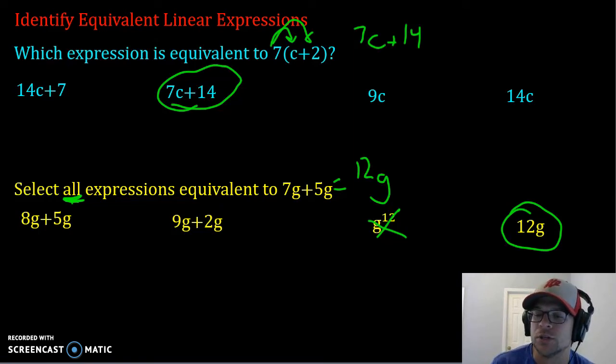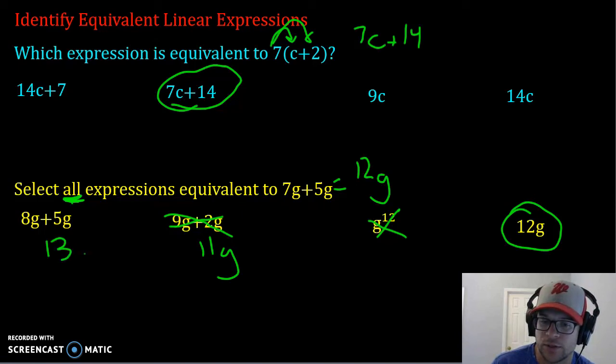9g plus 2g when you add this together, you get 11g, which is not the same thing as 12g. And 8g plus 5g is 13, which again is not the same thing.